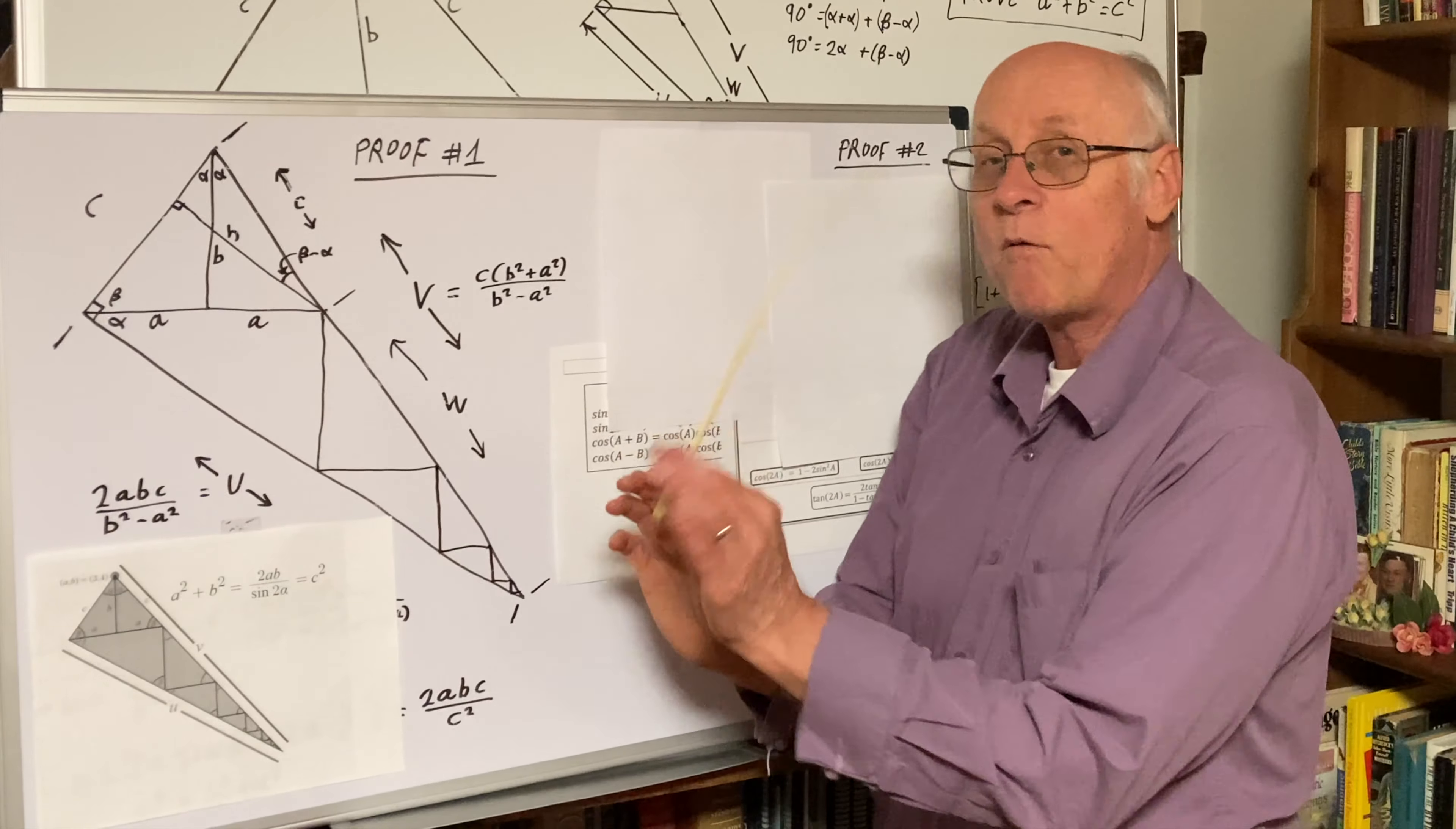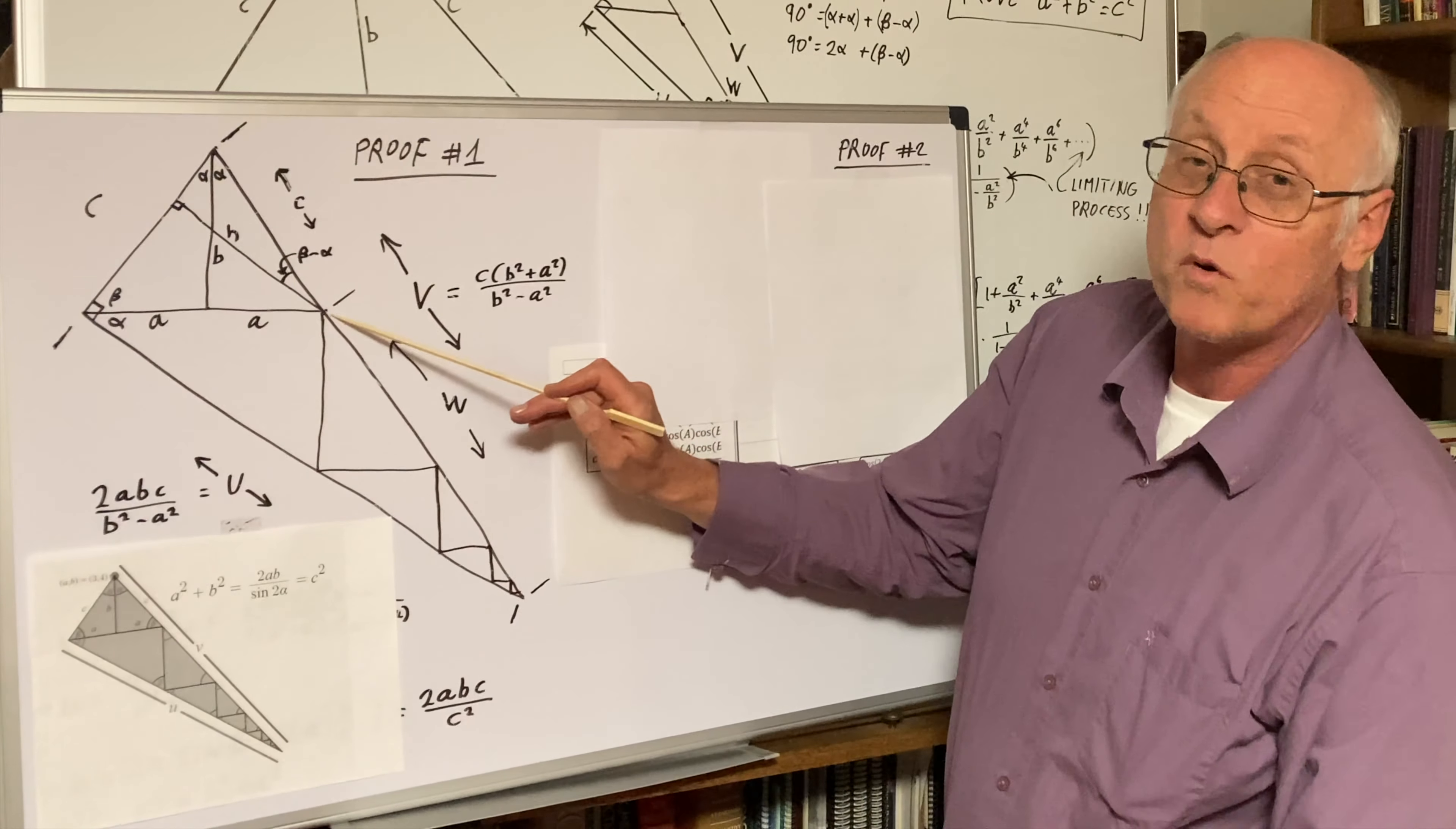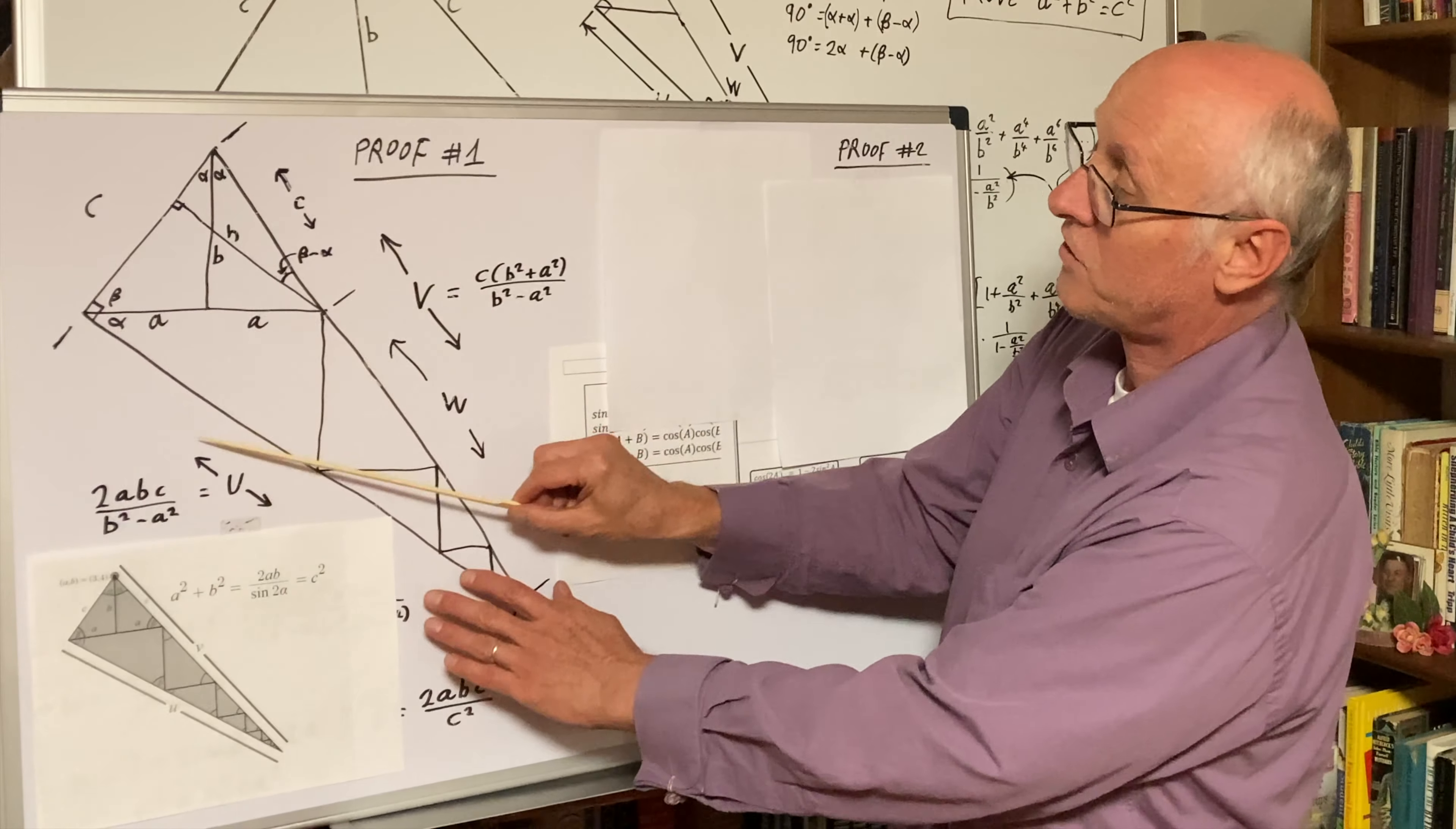Now what we will do is, you see this line? Parallel lines, move it parallel such that it crosses this point right here. So we have similar triangles. This angle here is beta minus alpha, same here, beta minus alpha. These are similar triangles.